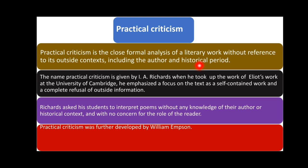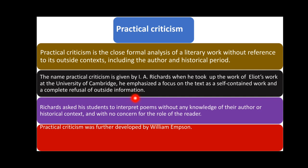The name practical criticism was given by I.A. Richards when he took up the work of Eliot at the University of Cambridge. He emphasized a focus on the text as a self-contained work and a complete refusal of outside information. Practical criticism began with Richards, who focused on the text itself and refused to study outside information such as social and political background or the intention of the author.